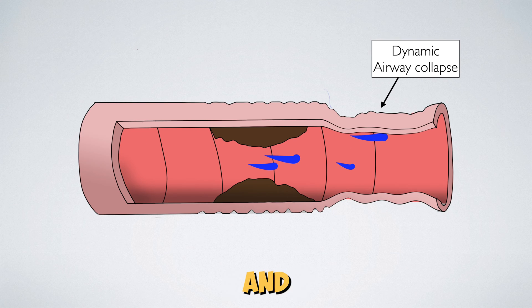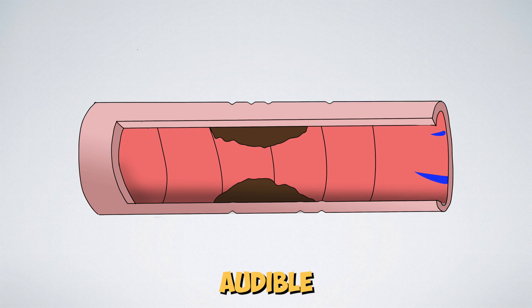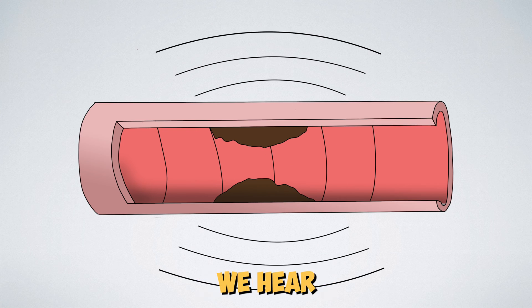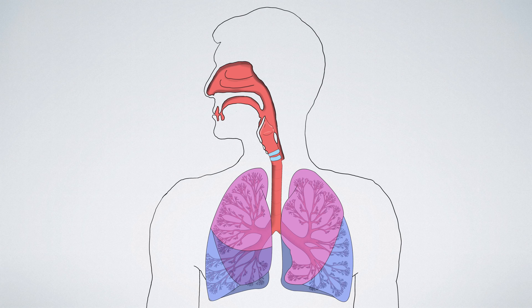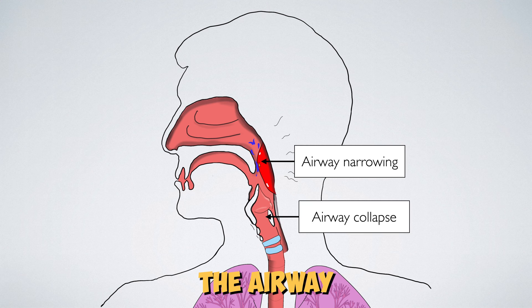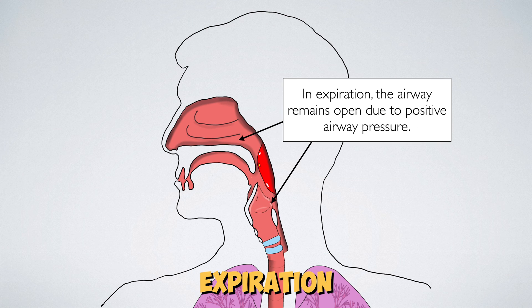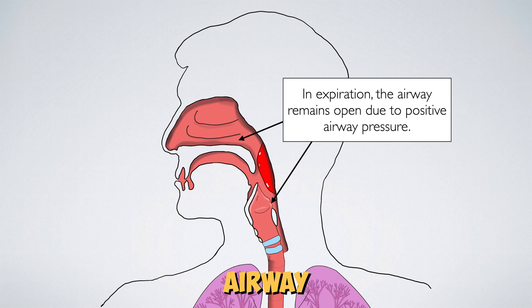Airway collapse and turbulent flow cause airway wall vibrations, which produce audible vibrations that we hear as stridor. Dynamic airway collapse occurs after the airway narrowing in the upper airway, and is more significant during inspiration. In expiration, collapse does not occur due to positive airway pressure.